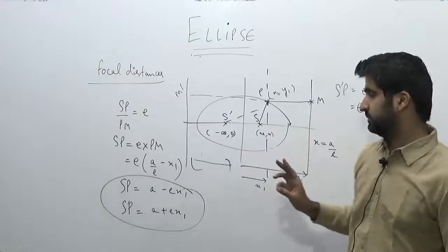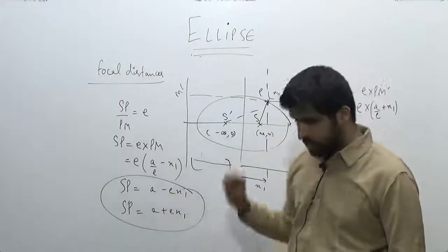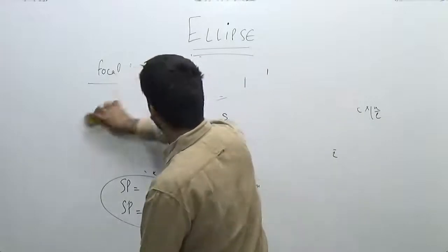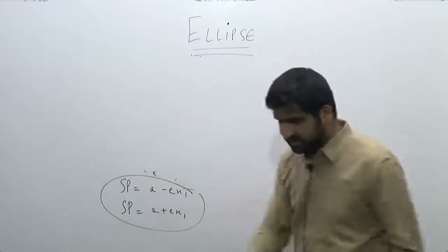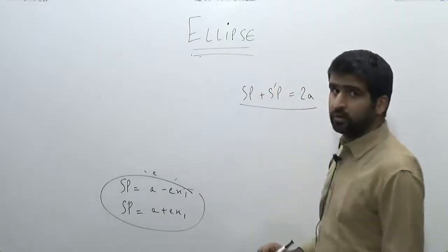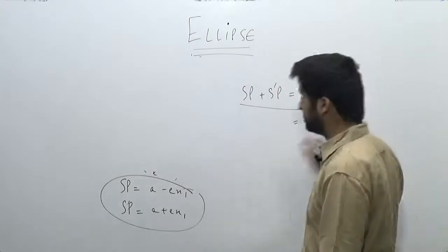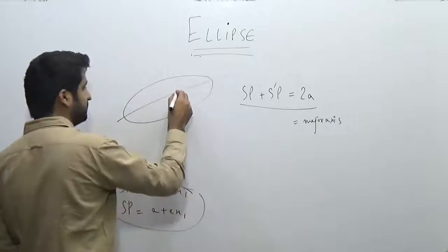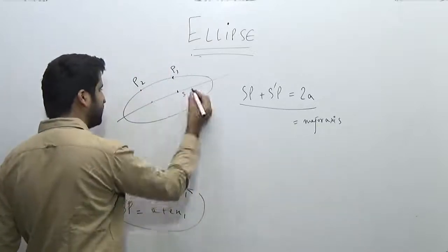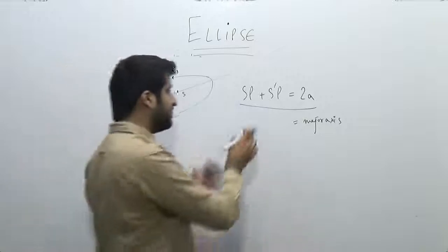What you need to know is the x-coordinate of that point, and you can easily find the focal distances. Now see the beauty about these two focal distances: if you add these two focal distances, the ex₁ terms cancel out, and what you are left with is SP plus S'P is equal to 2a. And what is 2a in the case of an ellipse? This is equal to the major axis. So the beauty of the ellipse is that wherever the point P may be — P1 or P2 — the sum of the two focal distances from S and S' will always be equal to 2a.